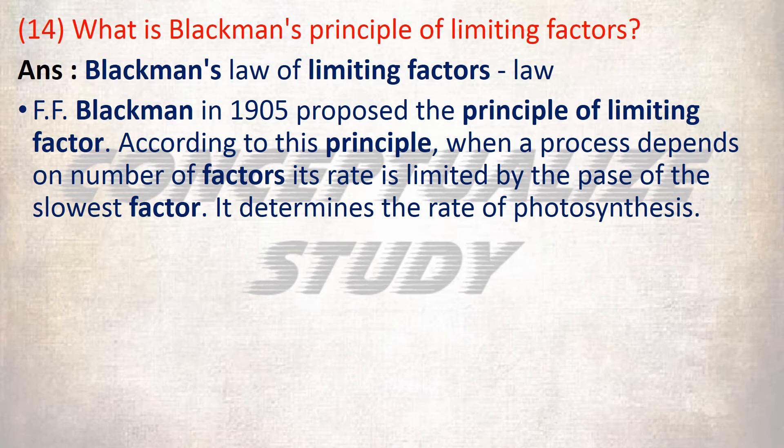The next is: what is Blackman's principle of limiting factors? Blackman's law of limiting factors: F.F. Blackman in 1905 proposed the principle of limiting factors. According to this principle, when a process depends on a number of factors, its rate is limited by the pace of the slowest factor. It determines the rate of photosynthesis.